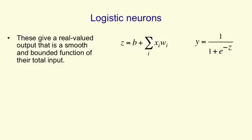It's its bias plus the sum over all its input lines of the value on an input line, Xi, times the weight on that line, Wi. It then gives an output, Y, that's a smooth non-linear function of that logit.